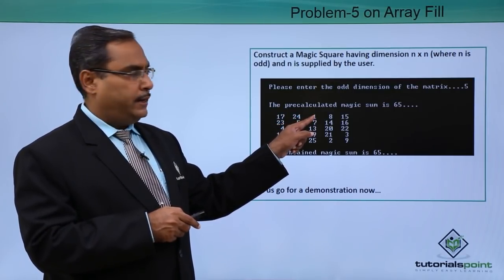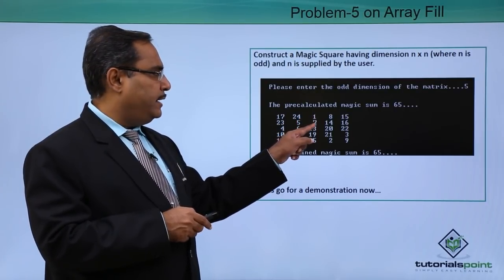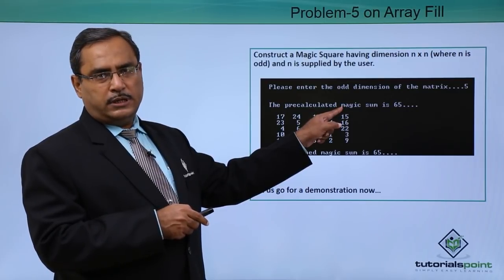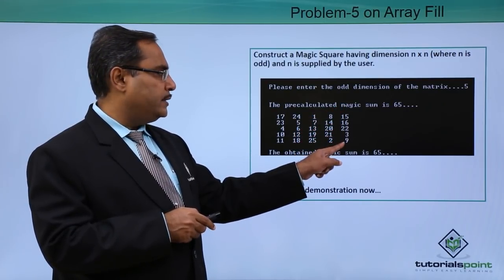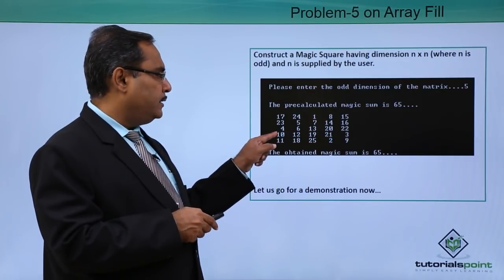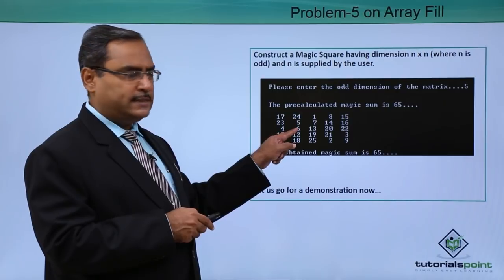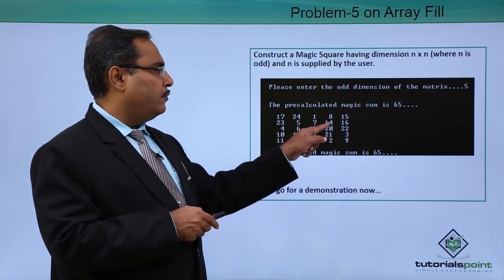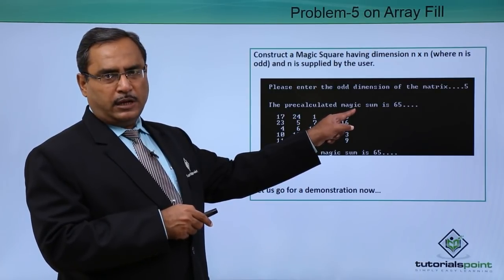But position 6 is preoccupied, so I shall start filling 6 from here. Then 7, 8, and 9 is outside the limits, so 9 will be here. 10 is outside the limits, so 10 will be here. 11 is preoccupied — it is filled up with 6 — so it will come down here. Then 11, 12, 13, 14, 15, and 16 is outside the limit.